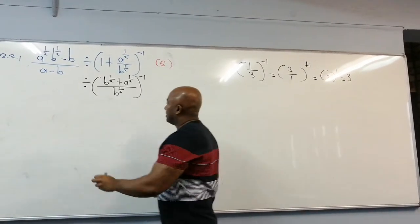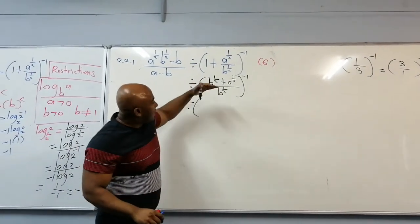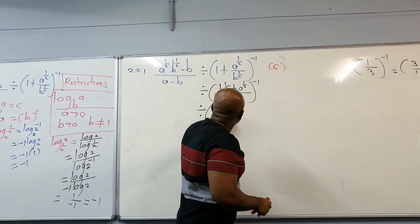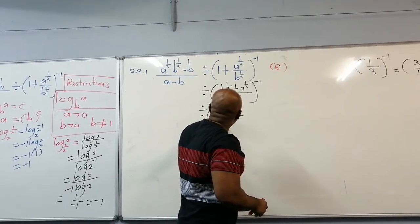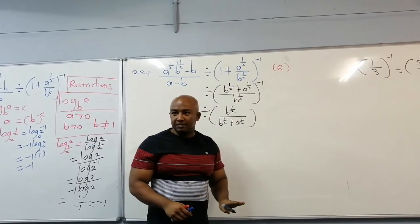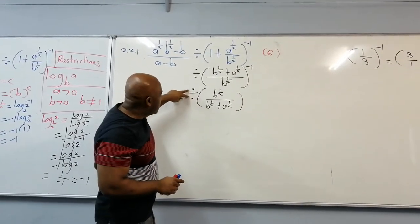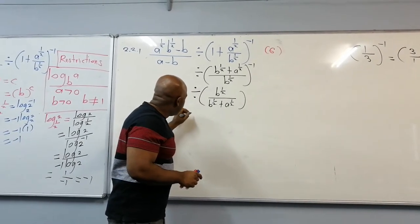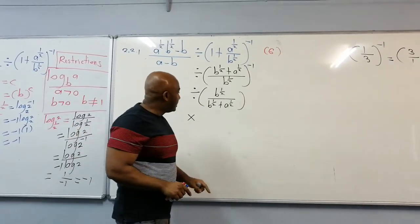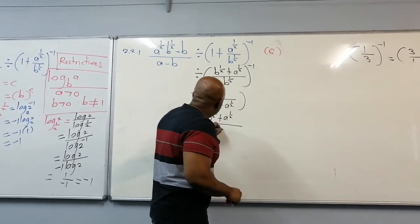Applying that here: swapping numerator and denominator gives b to the power 1 divided by b to the power 1 plus a to the power 1, and now it's a positive exponent. Now changing the division sign to multiplication means we swap numerator and denominator: it becomes b to the power 1 plus a to the power 1, all divided by b to the power 1.